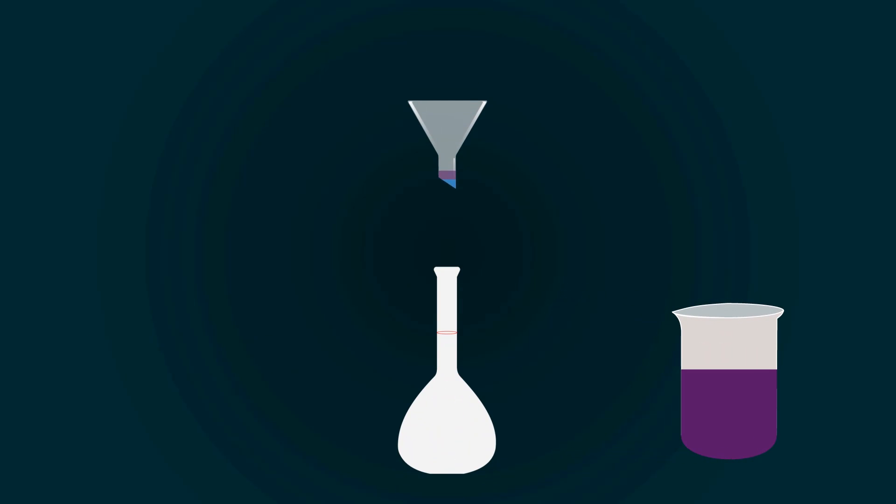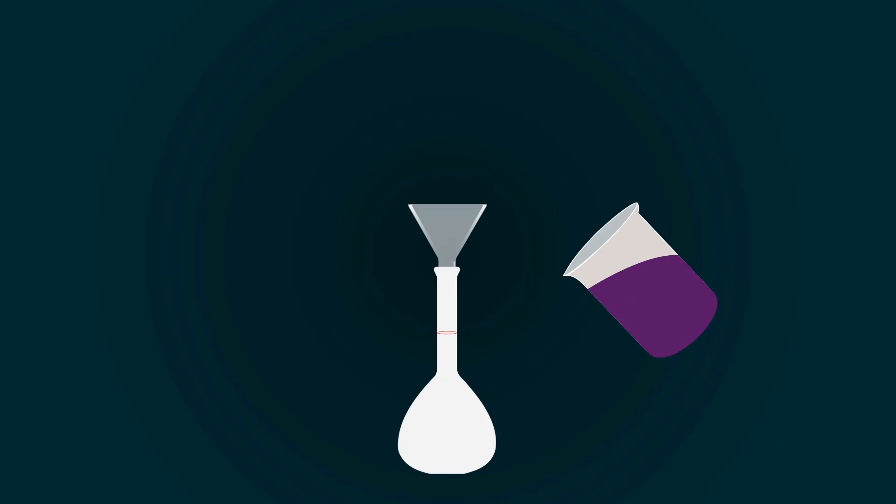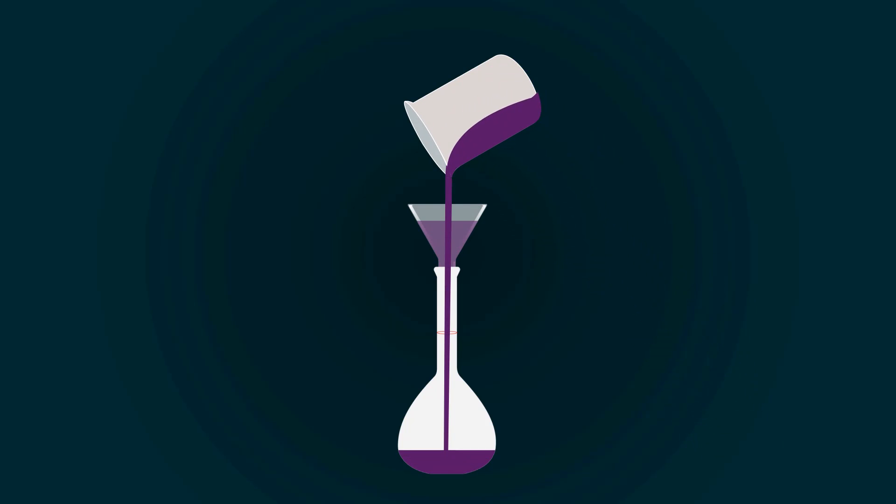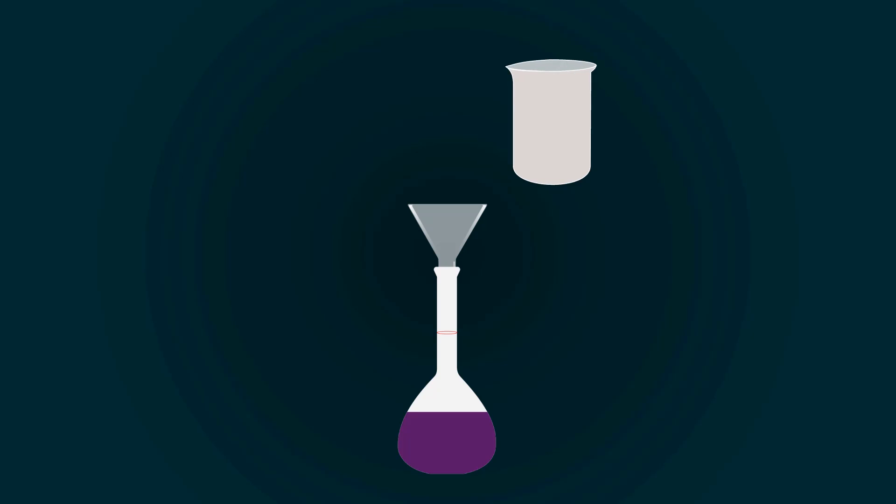Now pour all the solution into the volumetric flask with the help of the funnel. You have to fill the volumetric flask up to the 1000 milliliters point. For that you have to add more distilled water.